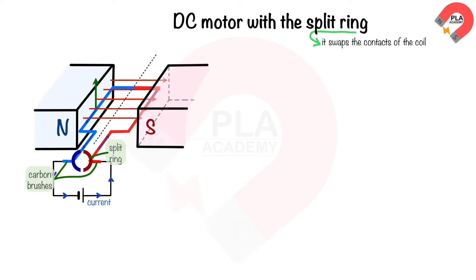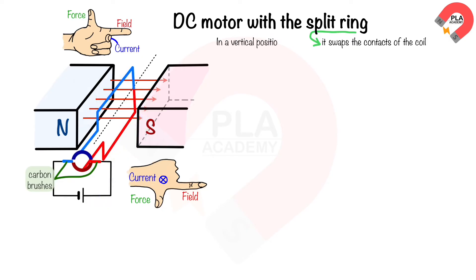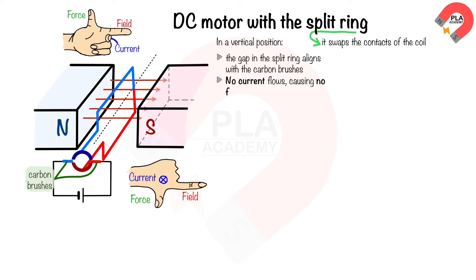is upward due to Fleming's left hand rule, and the force on the red side is downward. As the coil rotates until it reaches the vertical position, the gap in the split ring aligns with the carbon brushes. This means no current flows through the coil, causing no forces to act on either side.